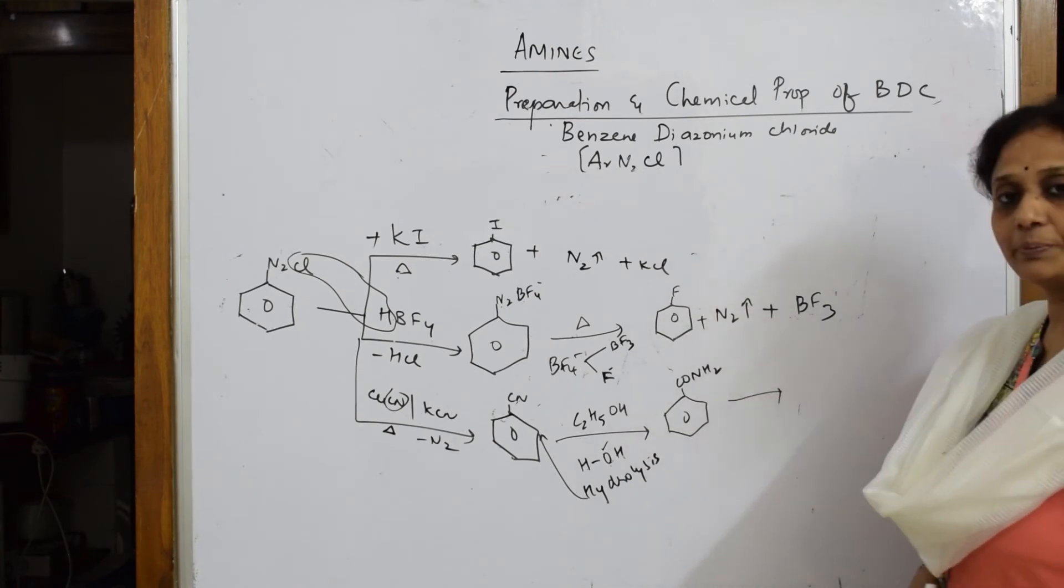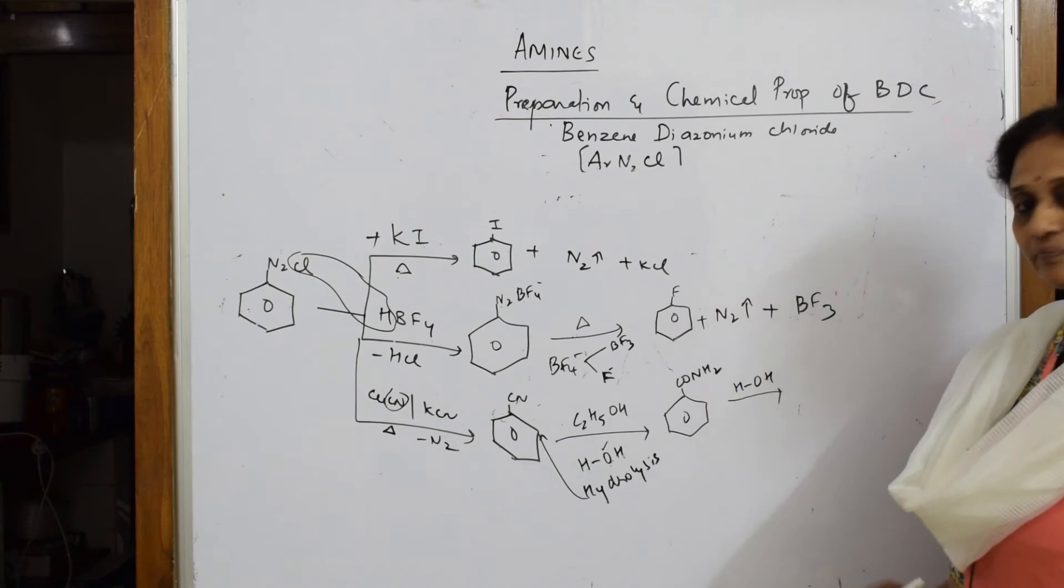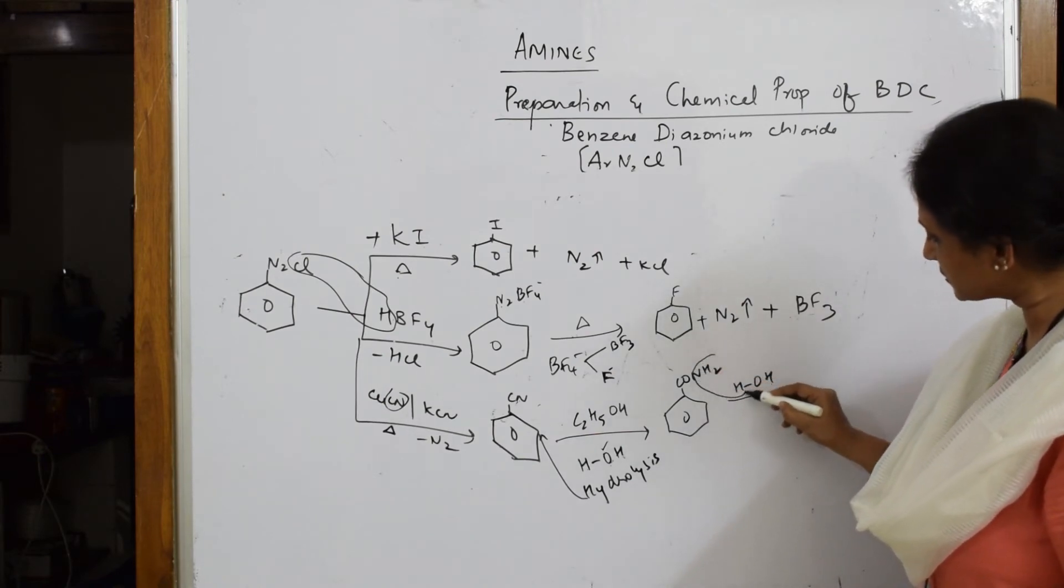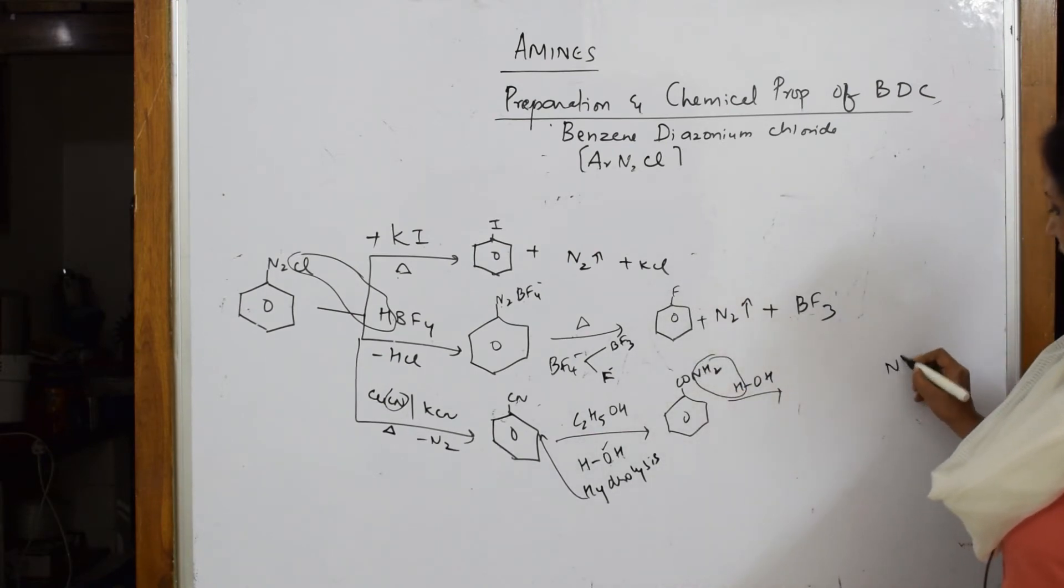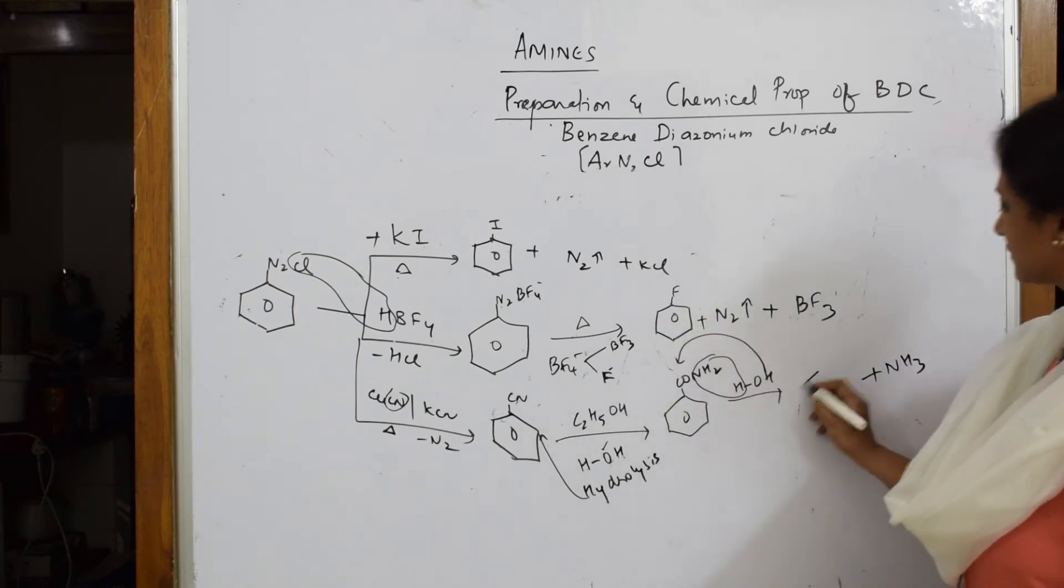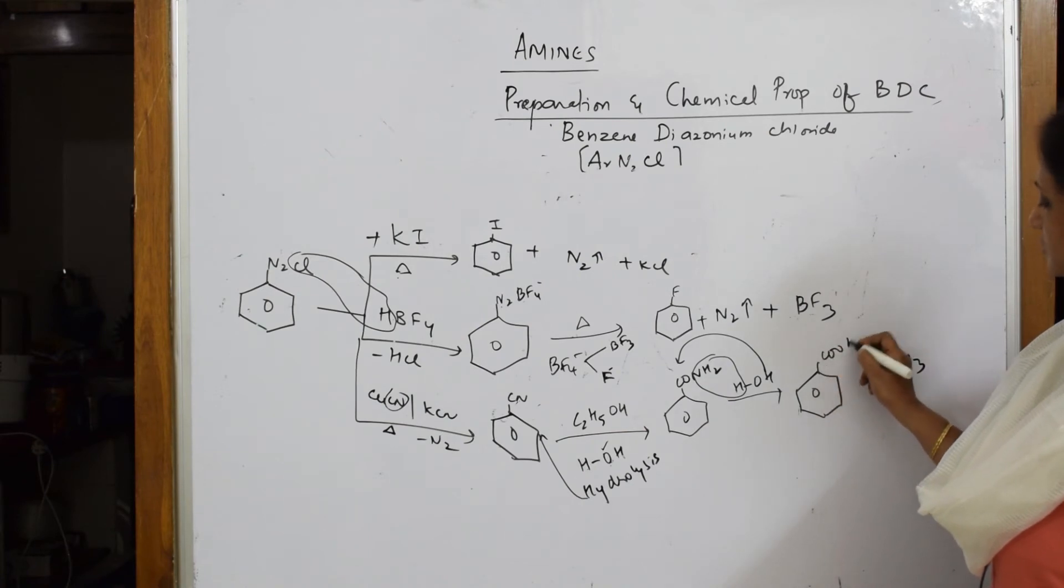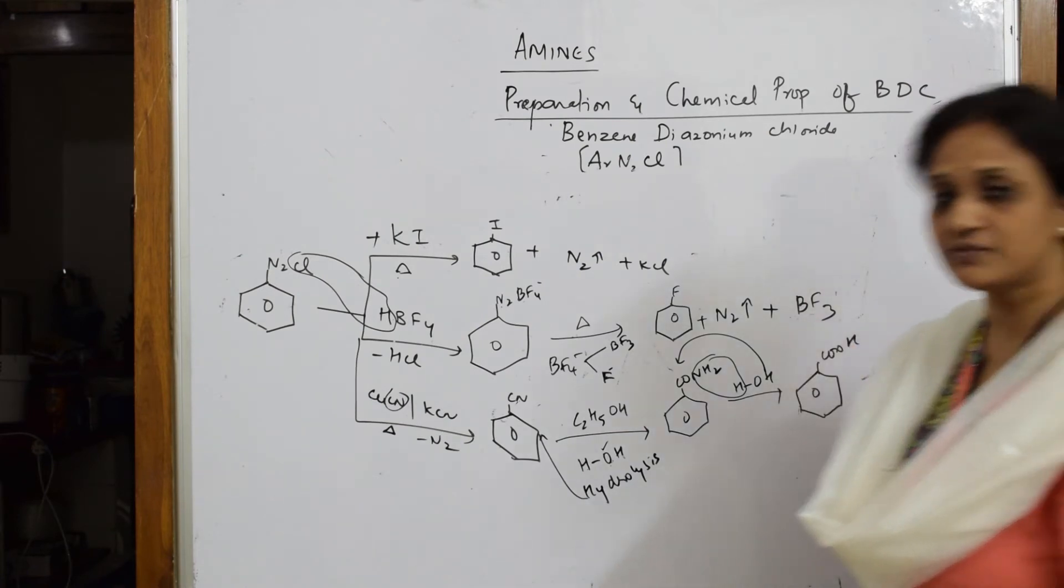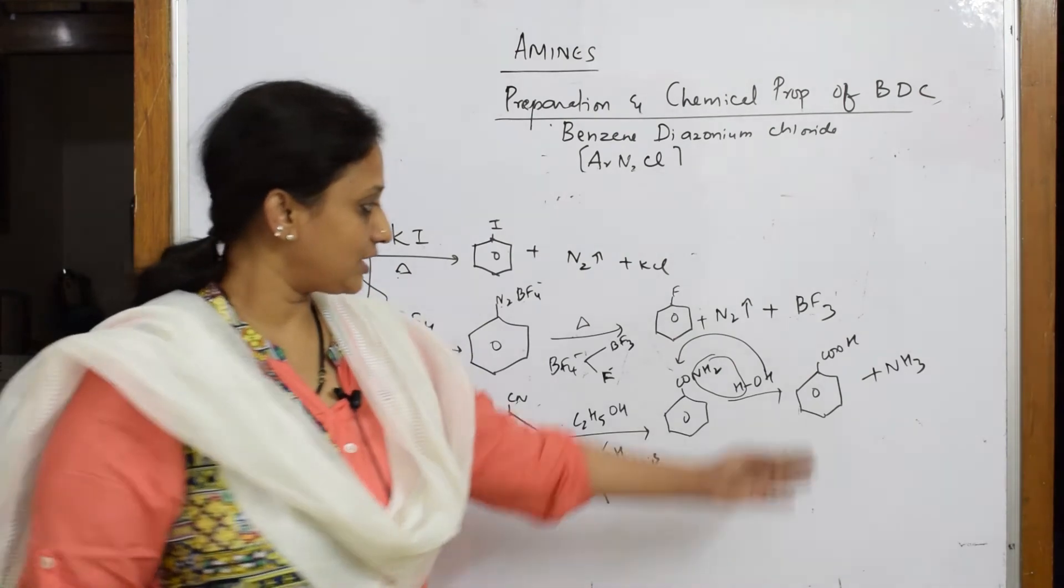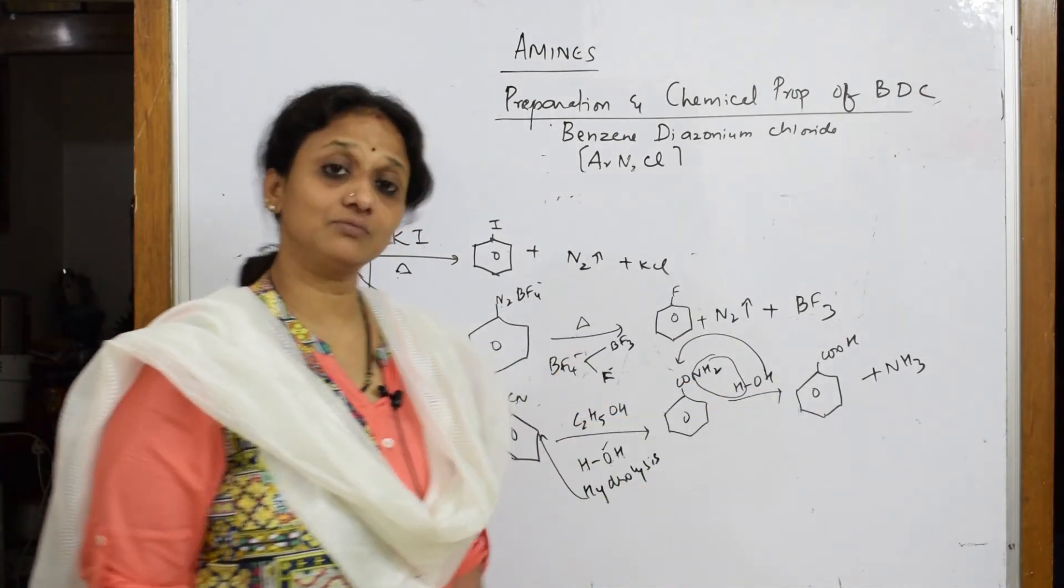Now still acid is not prepared. Further I am hydrolyzing it. Your NH2 comes out as NH3 ammonia and the leftover OH goes in. Now you have got your acid. Carboxylic acid. Benzoic acid because we have taken benzene ring. So have I not prepared from BDC benzoic acid?